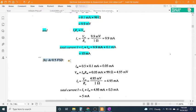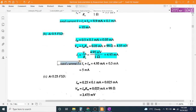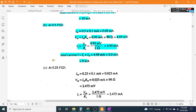Part B at 0.5 FSD: I_M = 0.5 × 0.1 mA = 0.05 mA. V_M = I_M × R_M = 0.05 mA × 99Ω = 4.95 mV. I_S = V_M / R_S = 4.95 mV / 1Ω = 4.95 mA. Total current I = I_M + I_S = 4.95 mA + 0.05 mA = 5 mA.